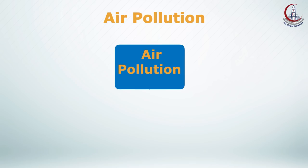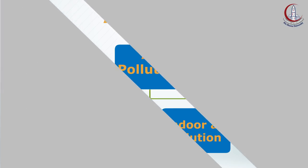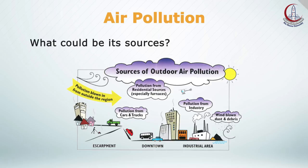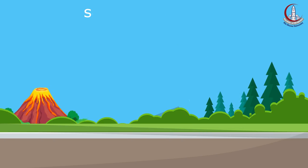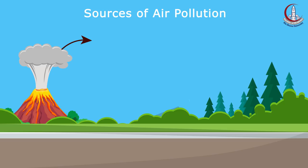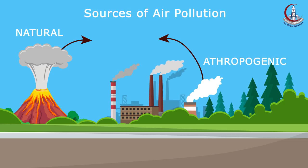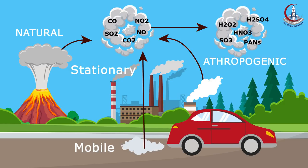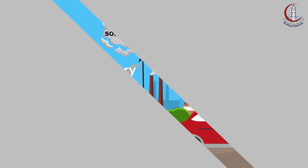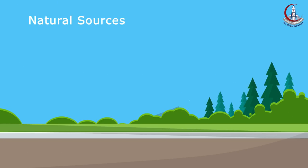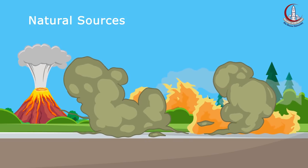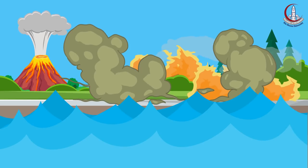Air pollution could be either outdoor or indoor. Regarding outdoor air pollution, its sources could be either natural or anthropogenic, or man-made. Natural sources of air pollution include volcano eruptions, forest fires, dust storms, oceans, plants, and trees.